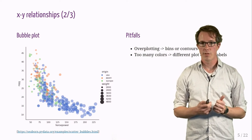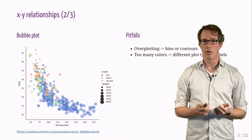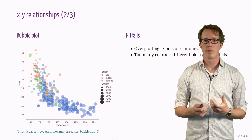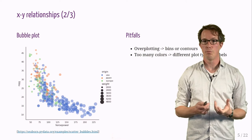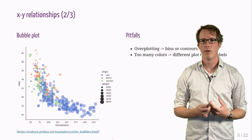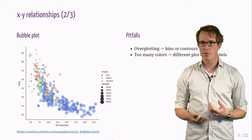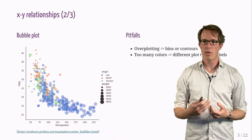A pitfall of scatter plots can be over-plotting. If there are too many dots or bubbles, then we can resort to bins or contours. If we need too many colors, it can indicate that we maybe need a different plot type.